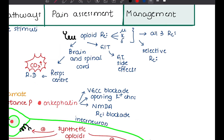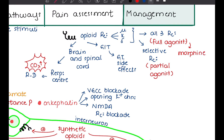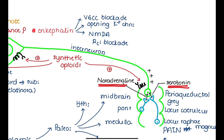Drugs that bind to all three opioid receptors are full agonists, while those that bind selectively at a specific receptor are partial agonists. An example of a full agonist is morphine; buprenorphine is an example of a partial agonist. Since norepinephrine and serotonin promote endogenous opiate production, antidepressants like SNRIs, SSRIs, and tricyclic antidepressants can relieve pain by increasing these excitatory neurotransmitters.